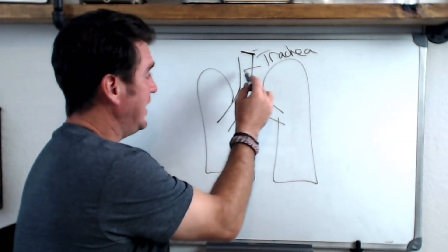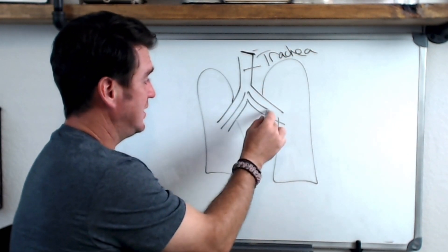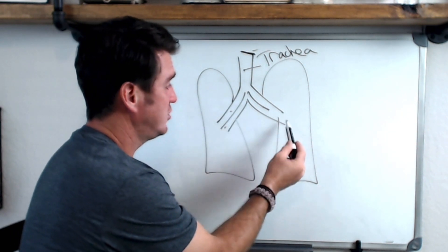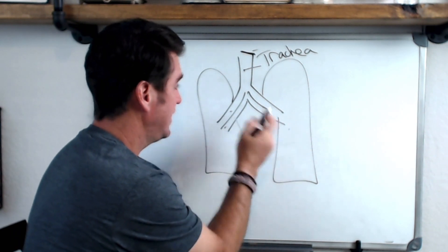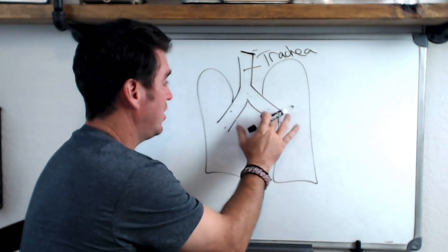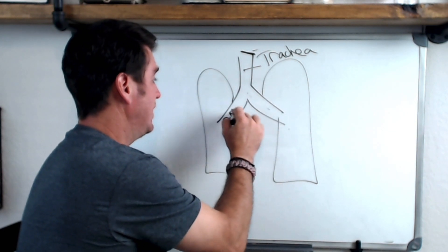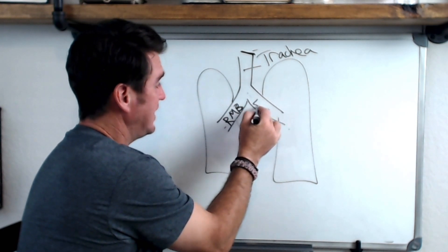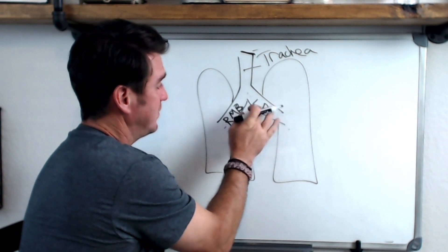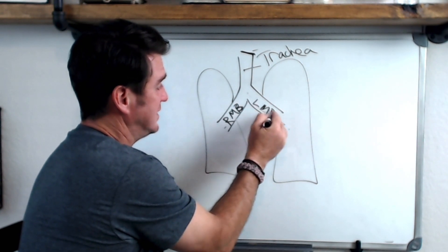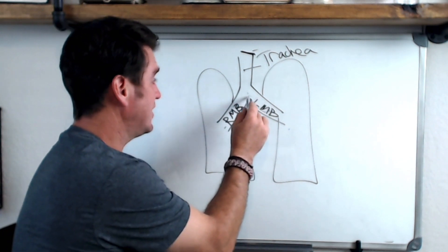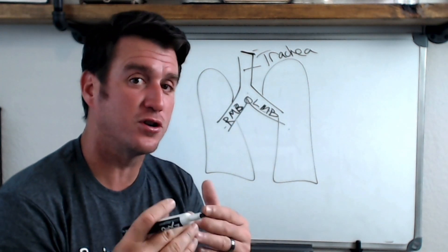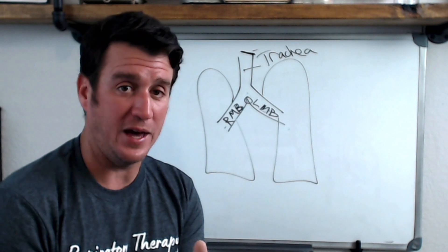The trachea then bifurcates — it turns into two different airways. One goes to the right, one goes to the left. This is what we call the right main stem bronchus and the left main stem bronchus. This little item right here where it bifurcates is called the carina. You need to know that.